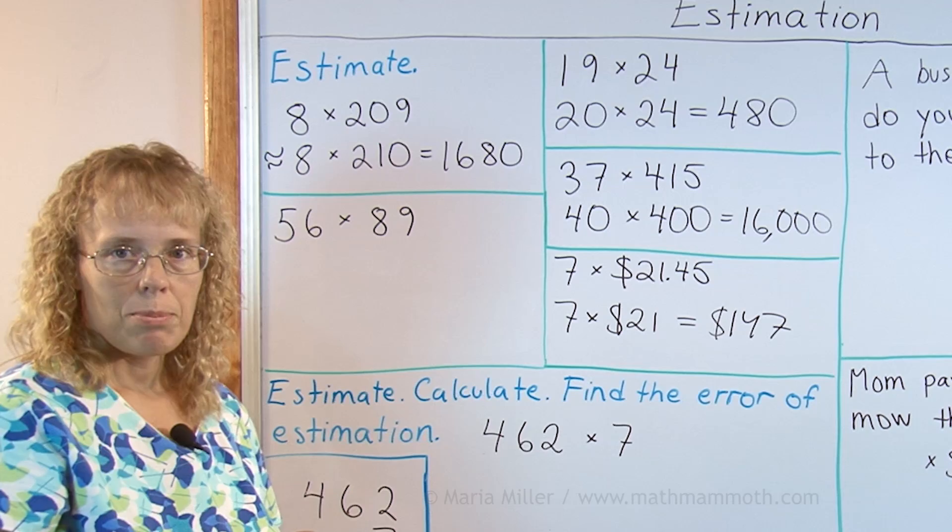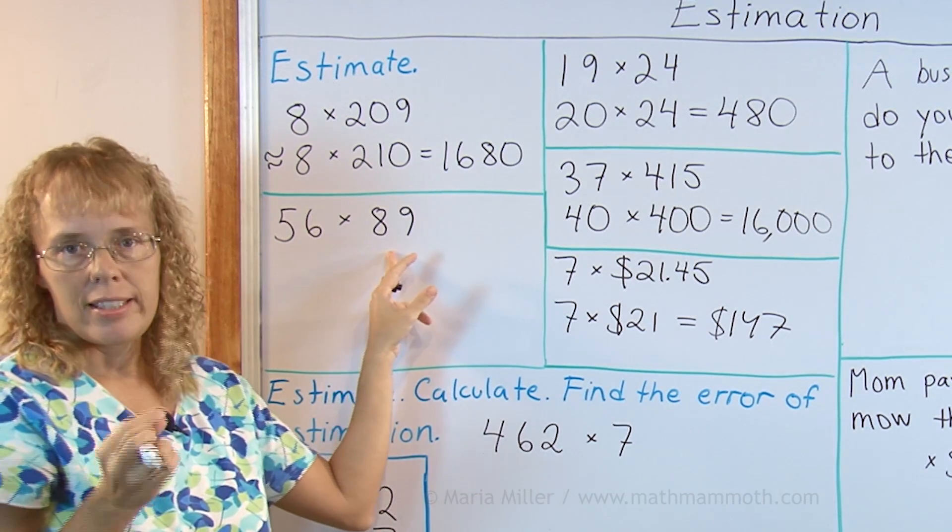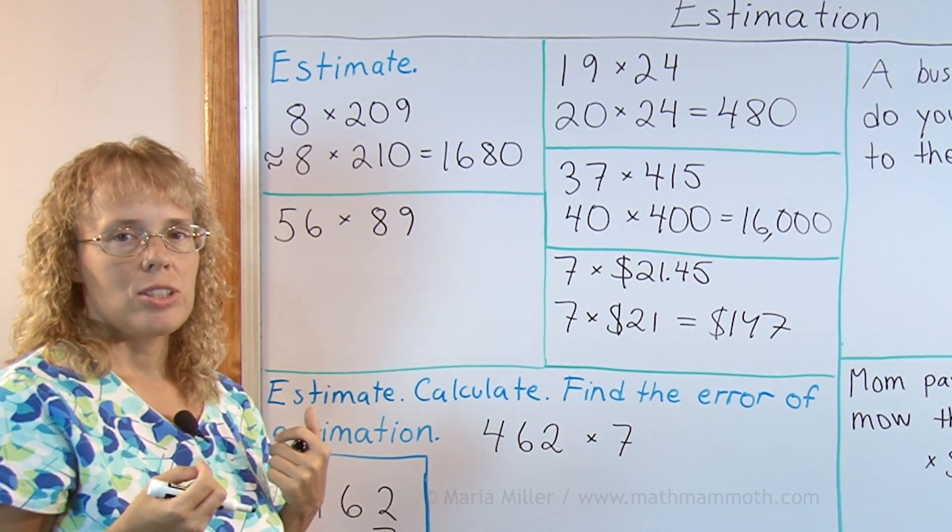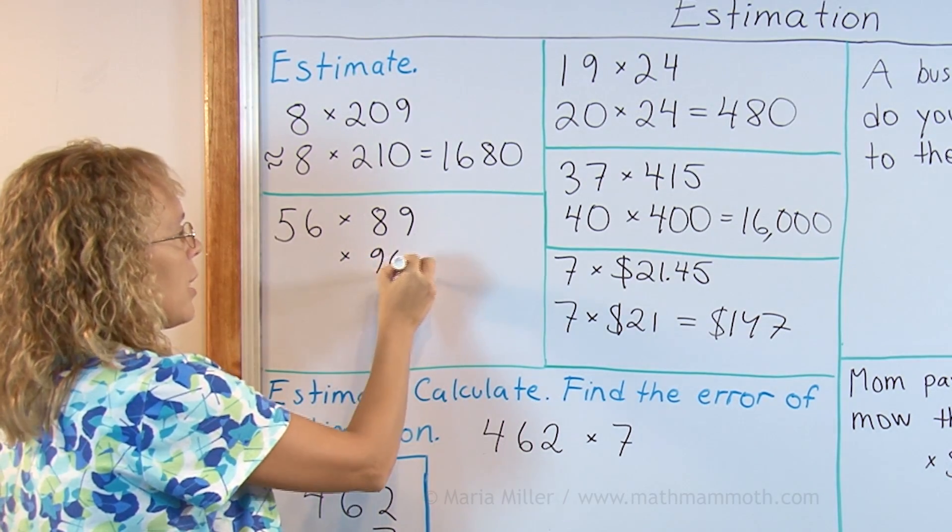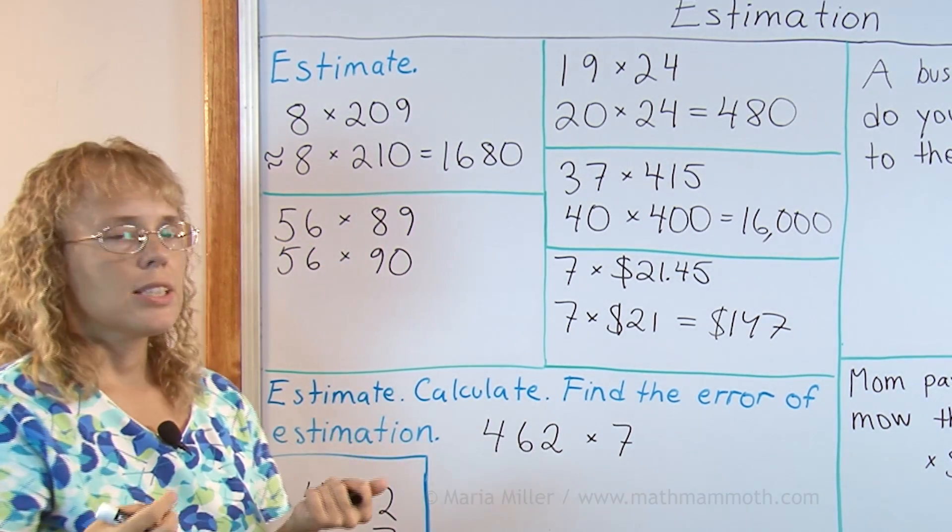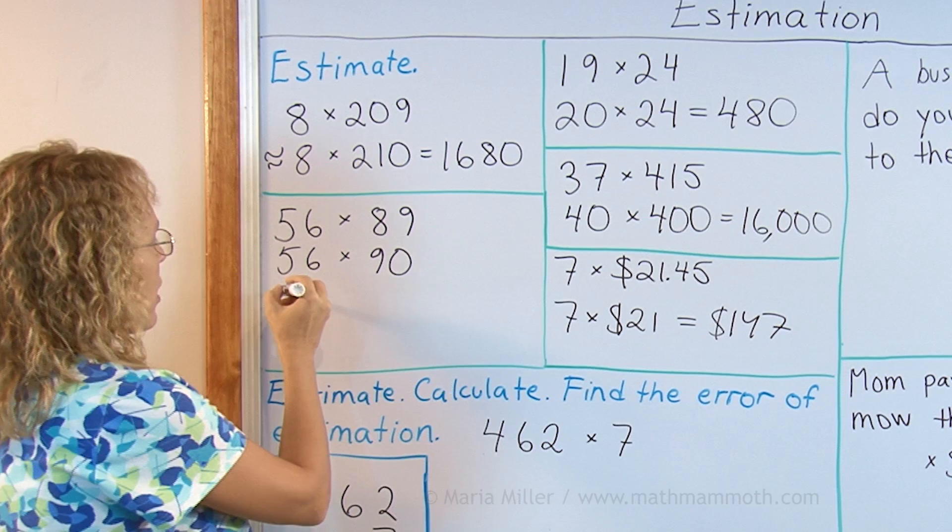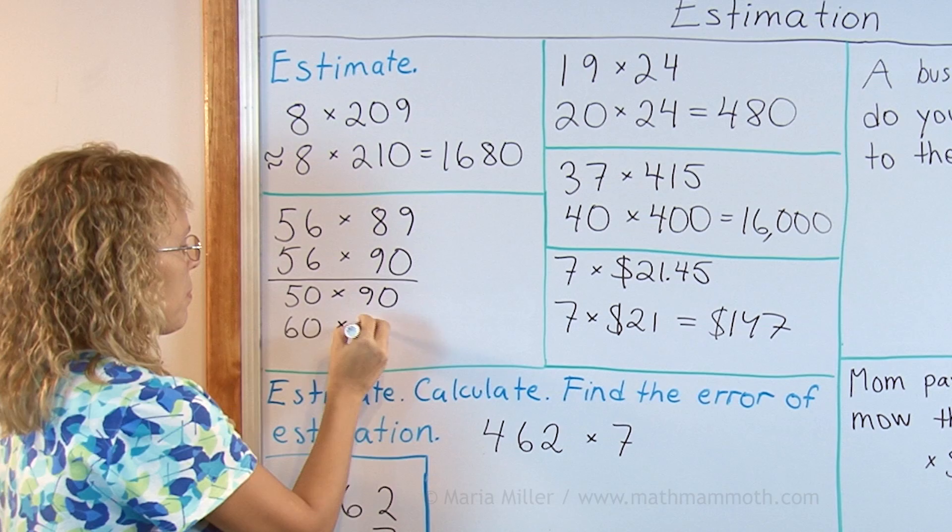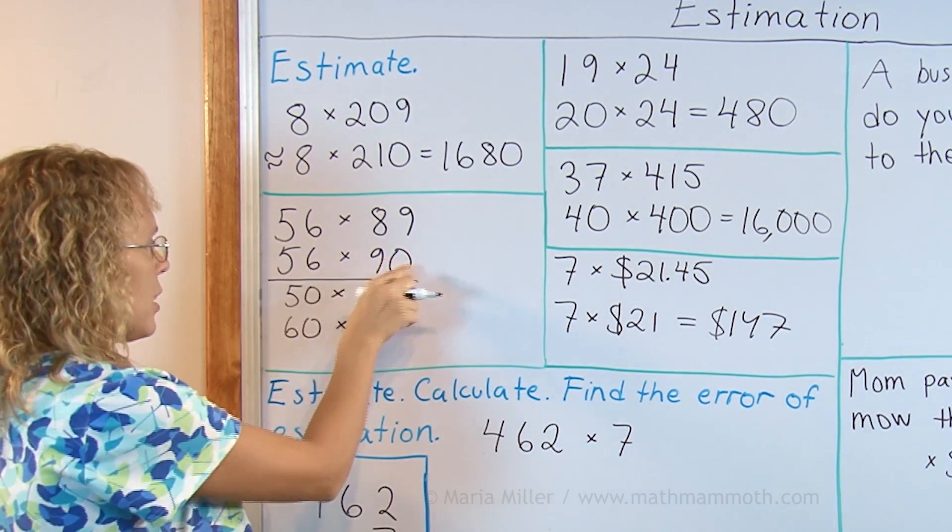Here two difficult numbers to multiply and we could if we start rounding to the nearest 10 I would get 60 times 90 and I will be rounding both of them up. And that gives more error to my estimation than if I could round one down and one up. So let me show you let's say round 89 to 90. And then since 56 is kind of close to 55 which is exactly the middle of 50 and 60.